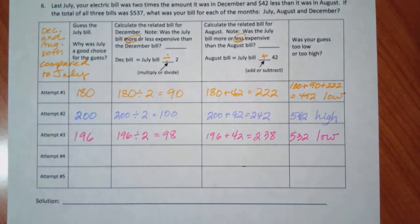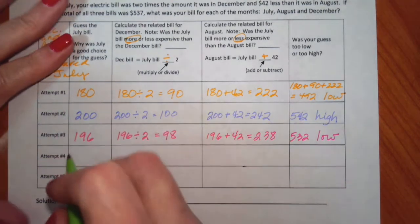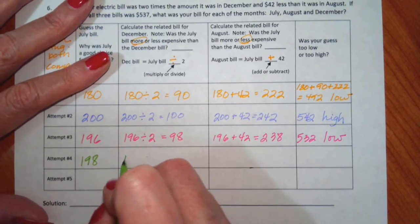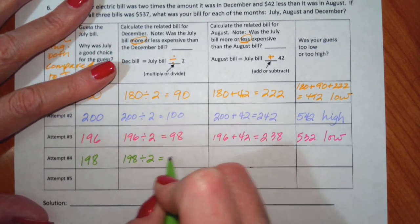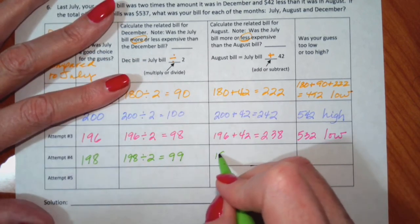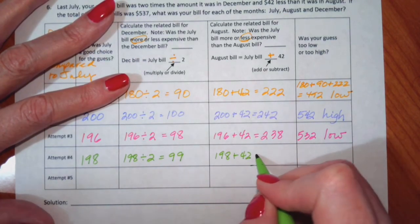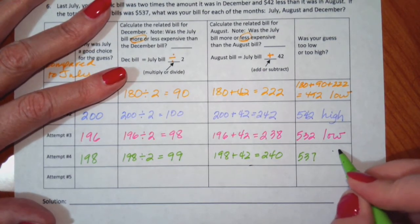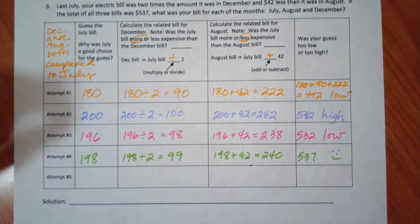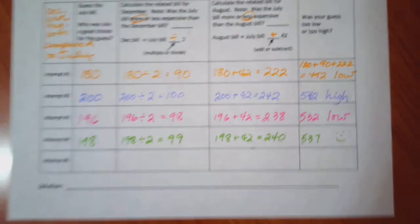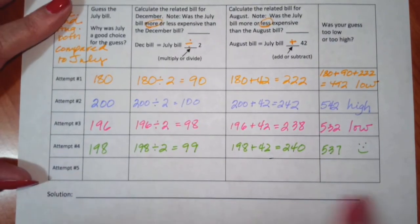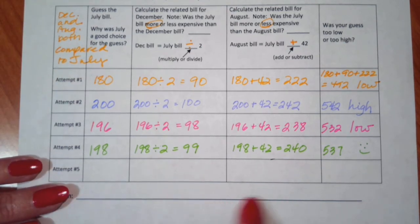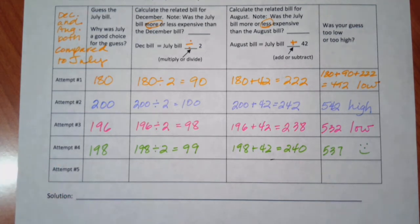So I'm just going to try again — sometimes you just get a feel for it. I'm going to try 198. 198 divided by 2 gives me 99. 198 plus 42 gives me 240. And that gives me 537, which is what I want. The July bill was $198, the December bill was $99, and the August bill was $240.